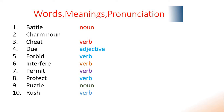Word number 9: puzzle. Repeat: puzzle. The word puzzle is a noun according to English grammar. Last word: rush. Repeat: rush. The word rush is a verb. Now let's talk about the meaning of these words in local language.